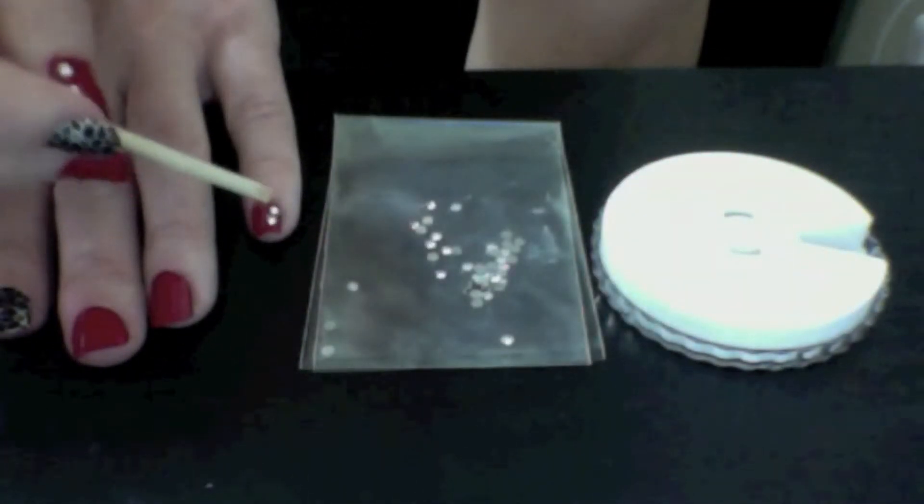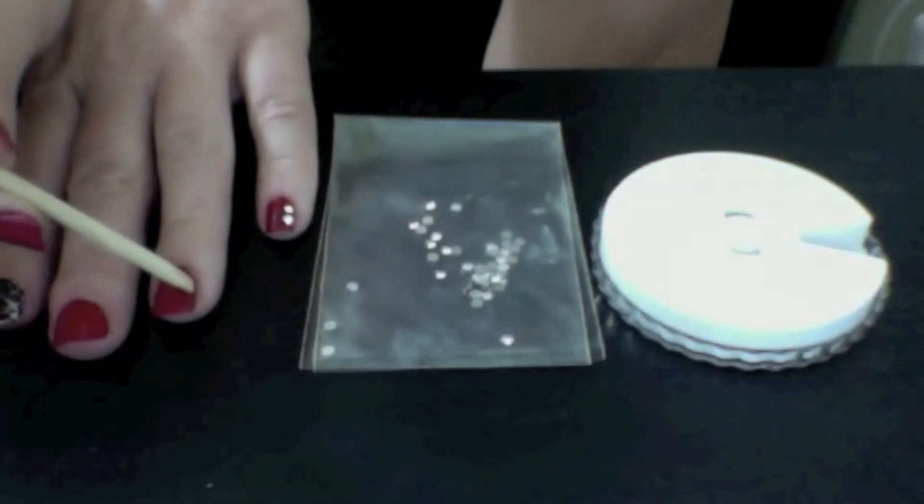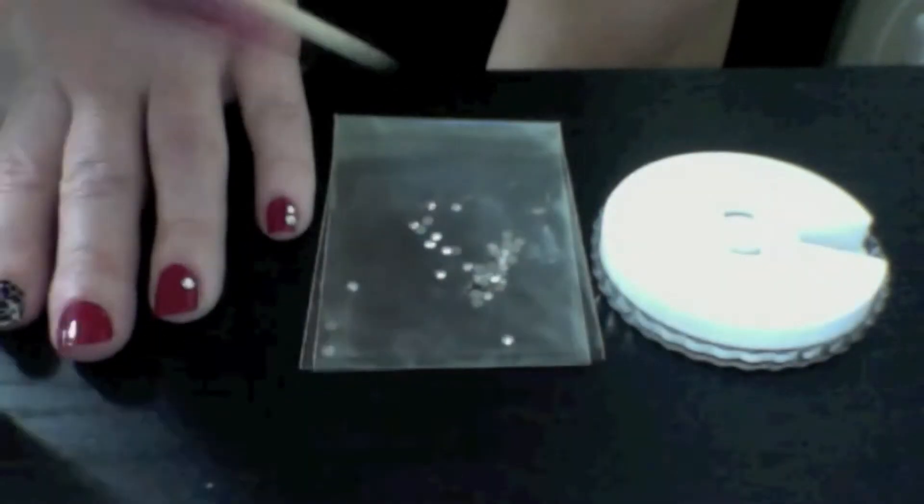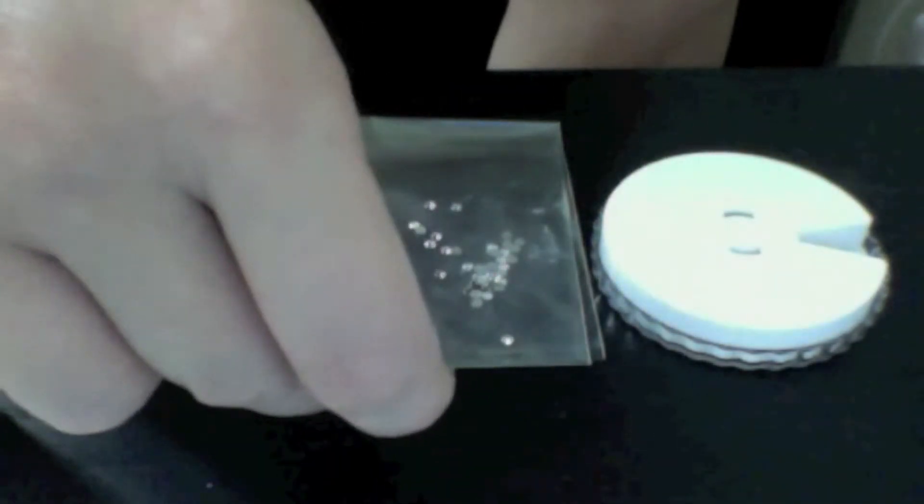As you can see, I'm just picking it up with the orange wood stick and applying the glue to the nail. And then going back and picking up the rhinestones and placing it where I want it. And I continue this on all of the fingers except for the index.